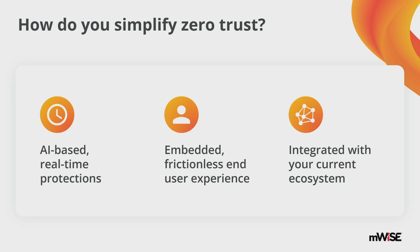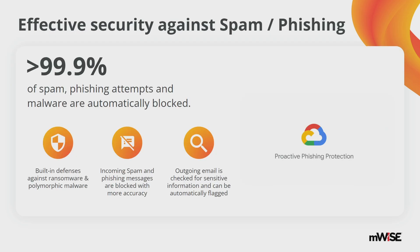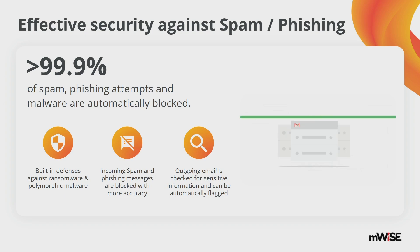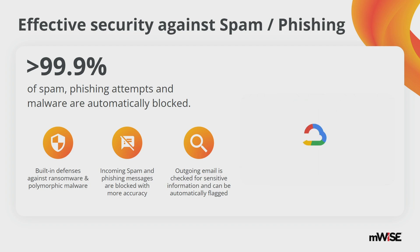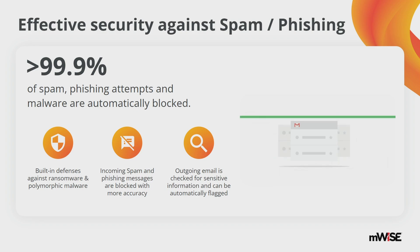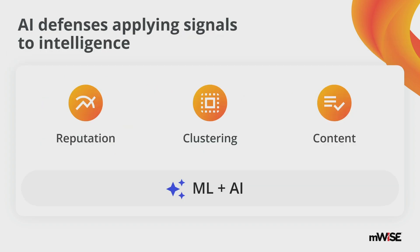With all of these in mind, we've created an email solution with enterprise-grade security and built-in AI defenses. This provides security around preventing phishing, spam, and spoofing emails from even showing up in your users' inbox, with over 99.9% accuracy. In the upcoming slides, we'll go layer by layer on how we achieve this.